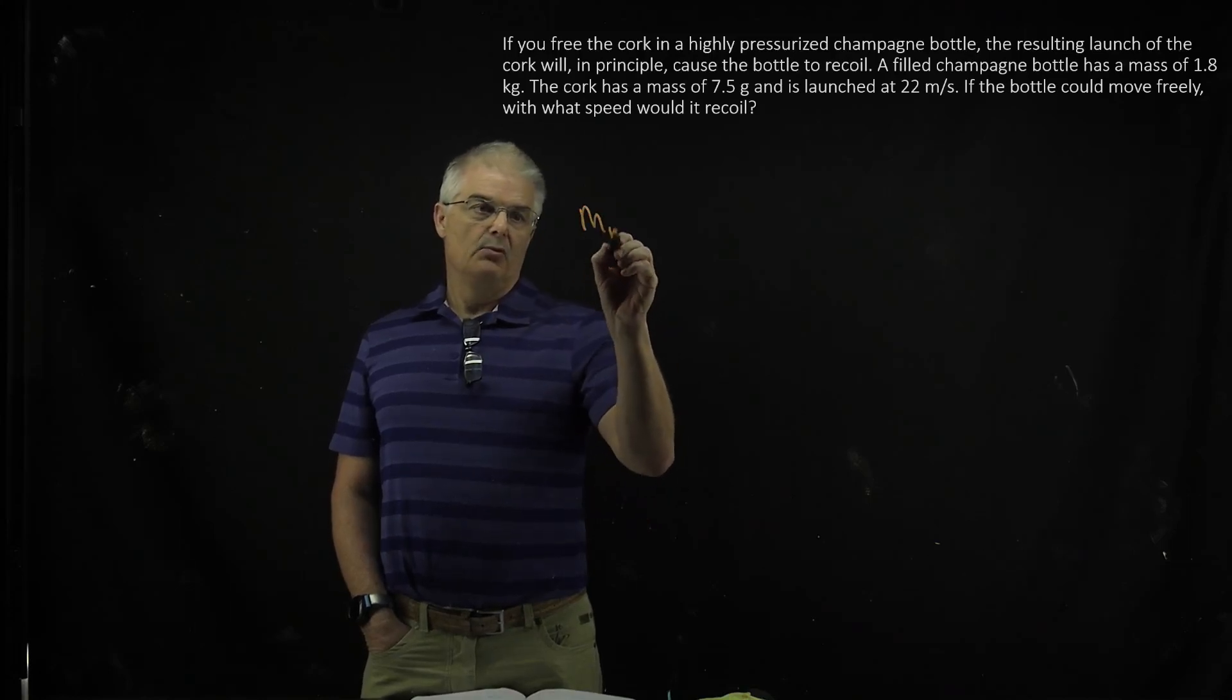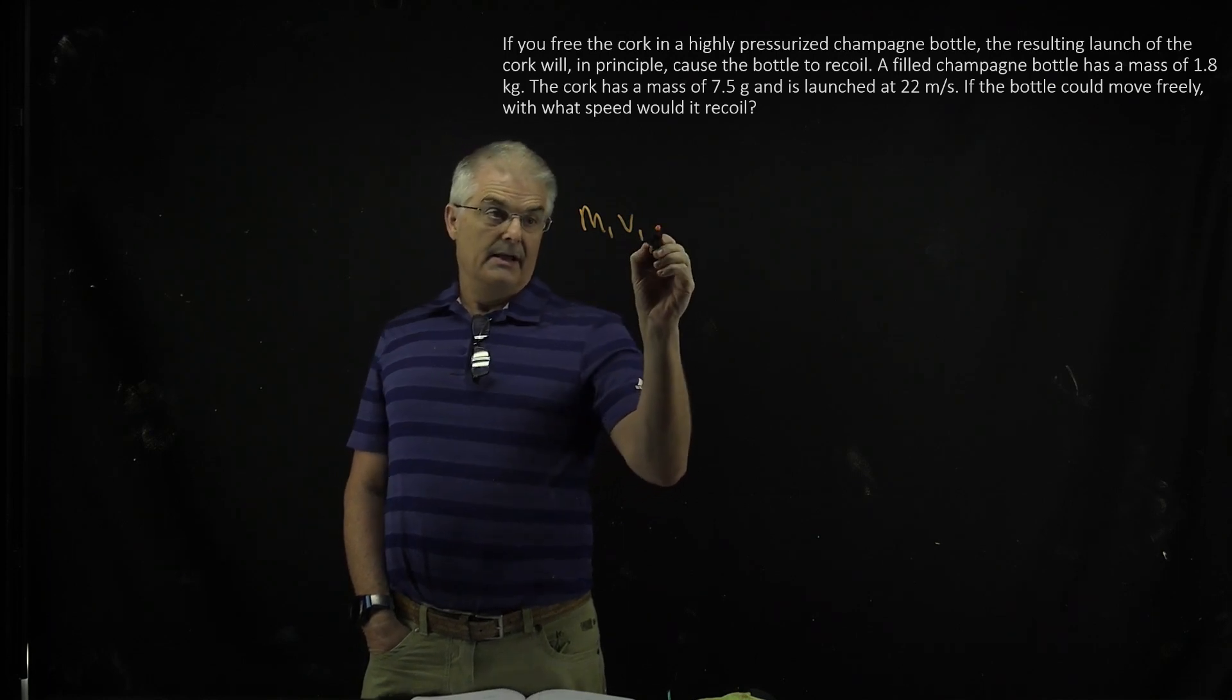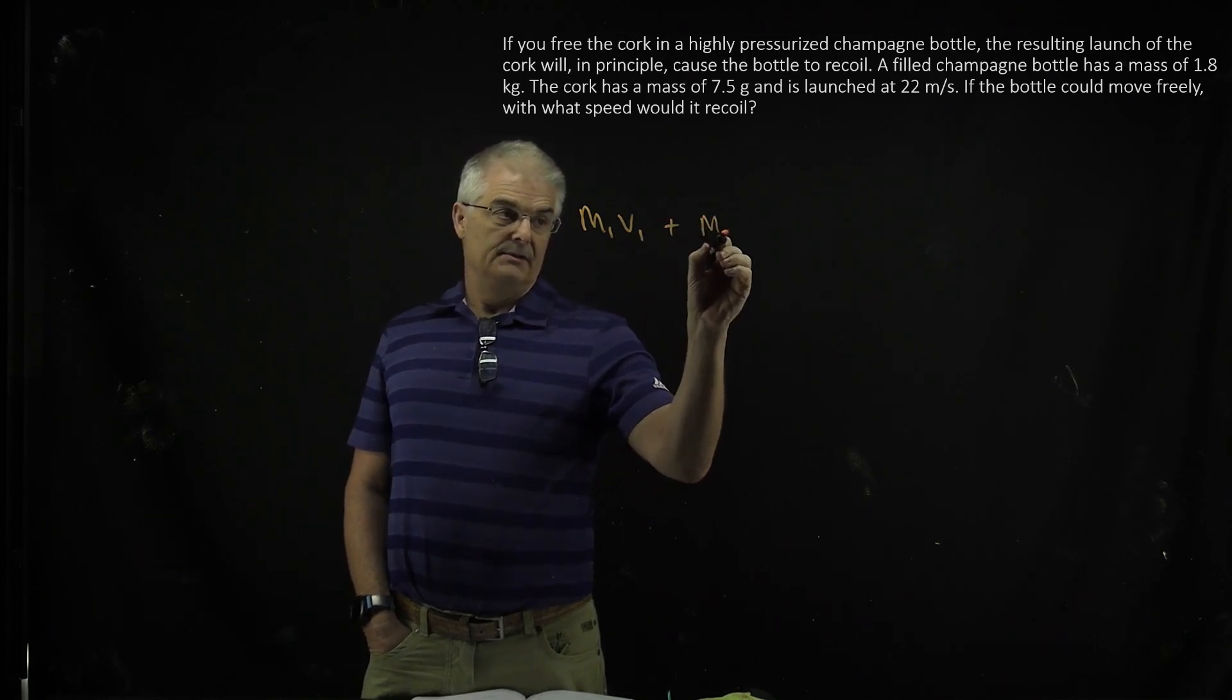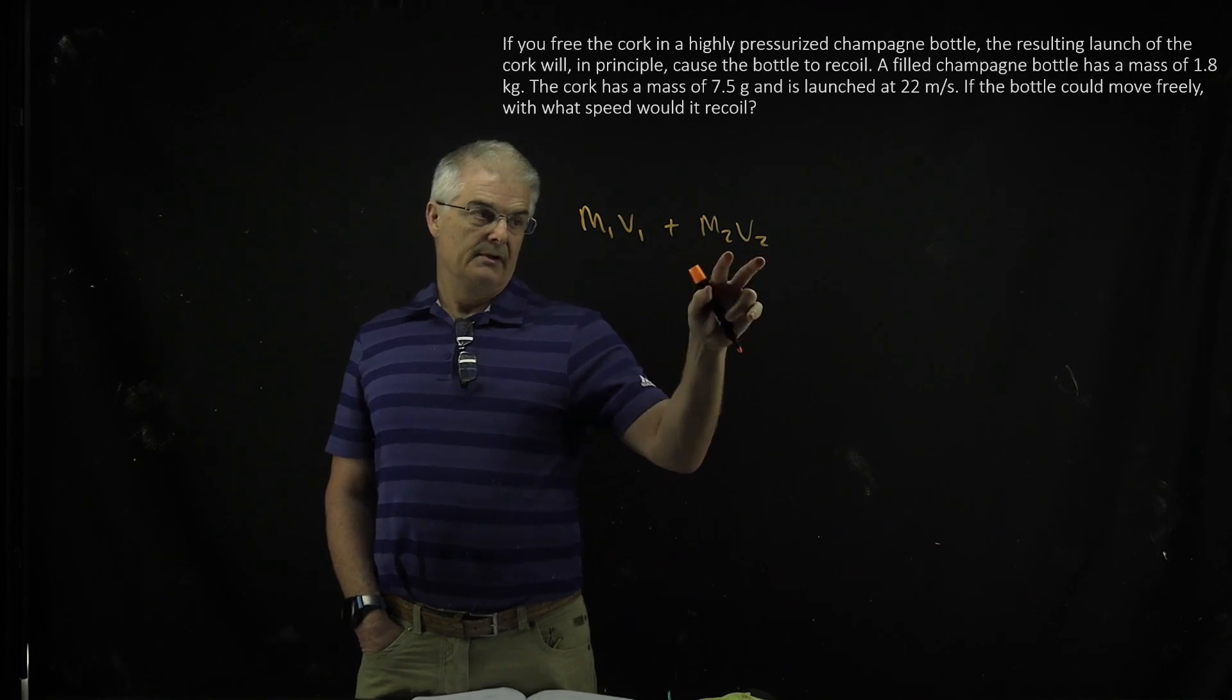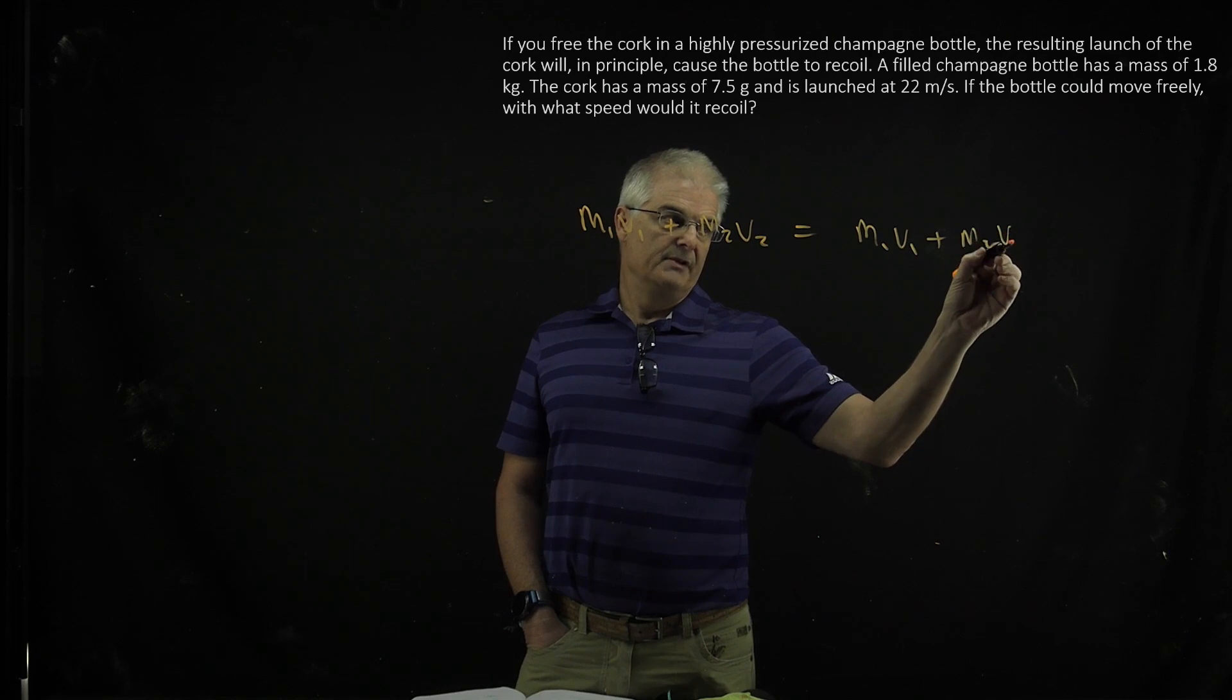This is a very simple equation: M1V1, the mass of the cork and the champagne bottle. Cork is 1 and champagne bottle is equal to M1V1 plus M2V2.